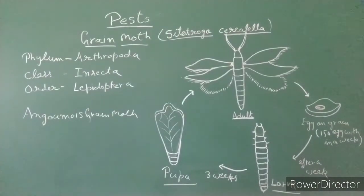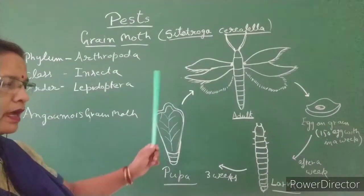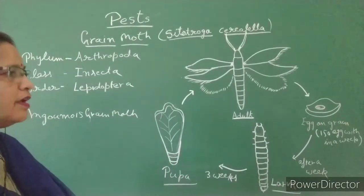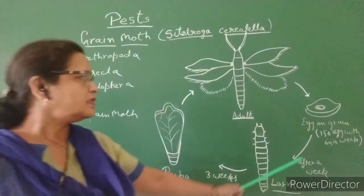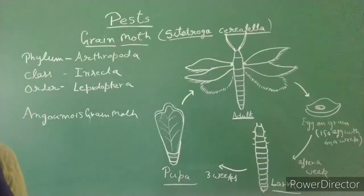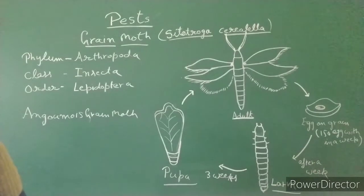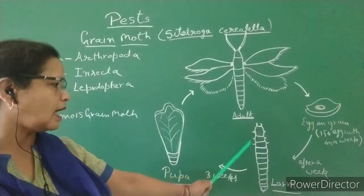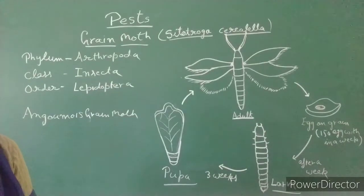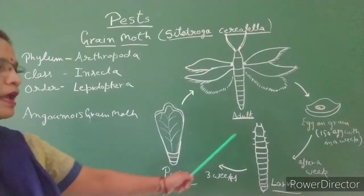If we look at the life cycle, after emergence the adult moth starts mating after 2 to 3 days. After fertilization, the female lays eggs. The female lays 150 eggs in a week. Eggs are white in color, but after a few days they become red in color. After that, the eggs hatch and larvae come out. The larvae are white or creamy in color and they are voracious feeders. The maximum damage is caused by the larvae.